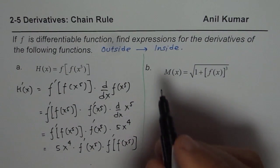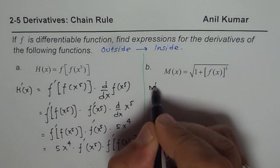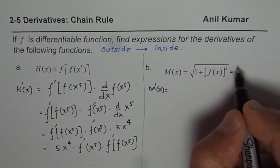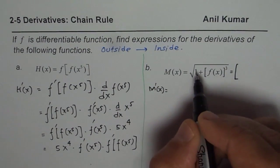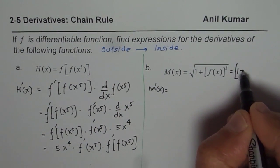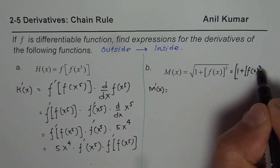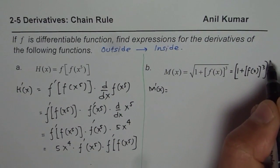The derivative of this function, M'(x), equals the outside function. It's good practice to write them in exponent form, so we will write it to the power of 1/2. So we have (1 + [f(x)]³)^(1/2).